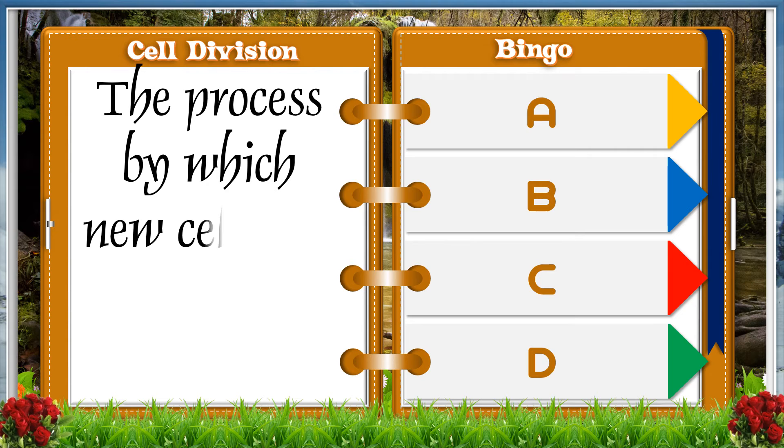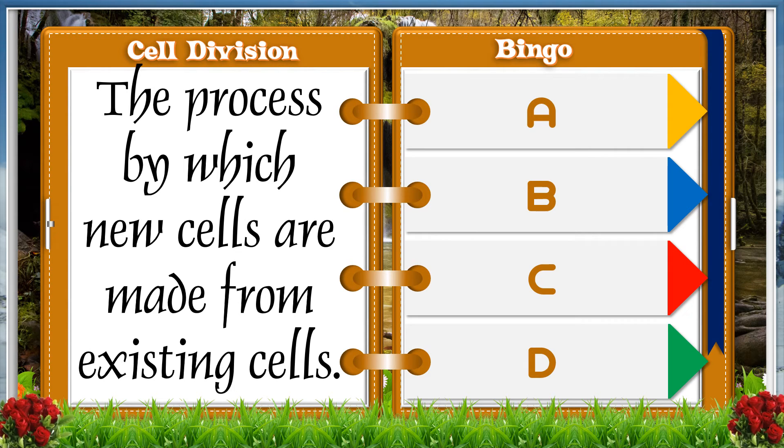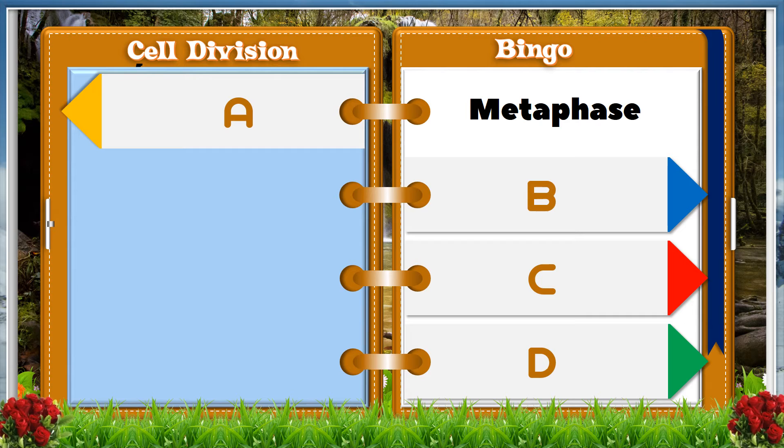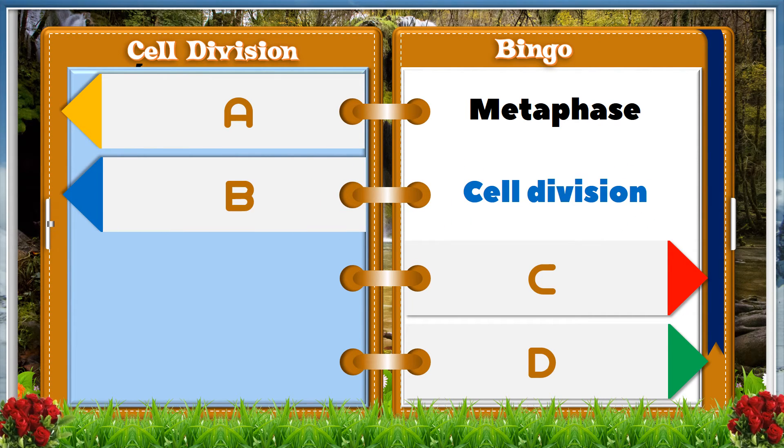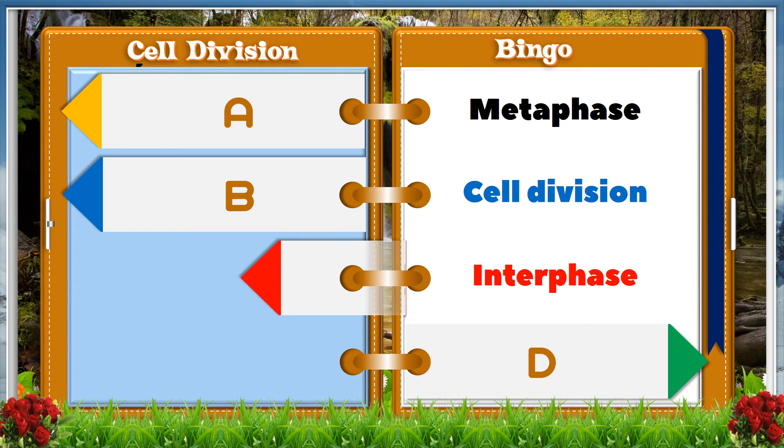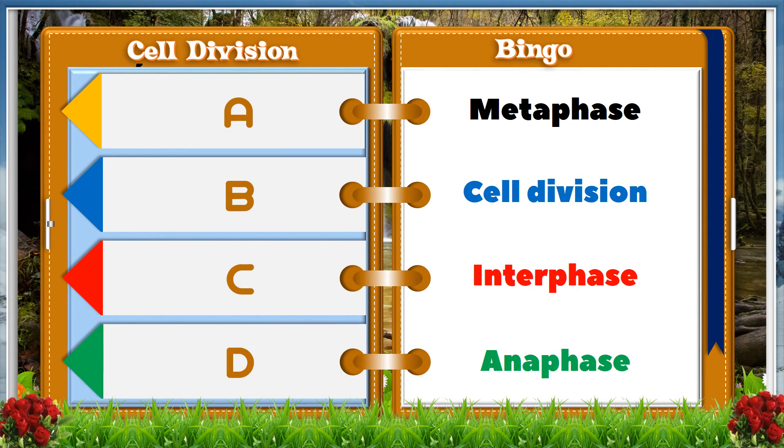The process by which new cells are made from existing cells. A metaphase, B cell division, C interphase, D anaphase.